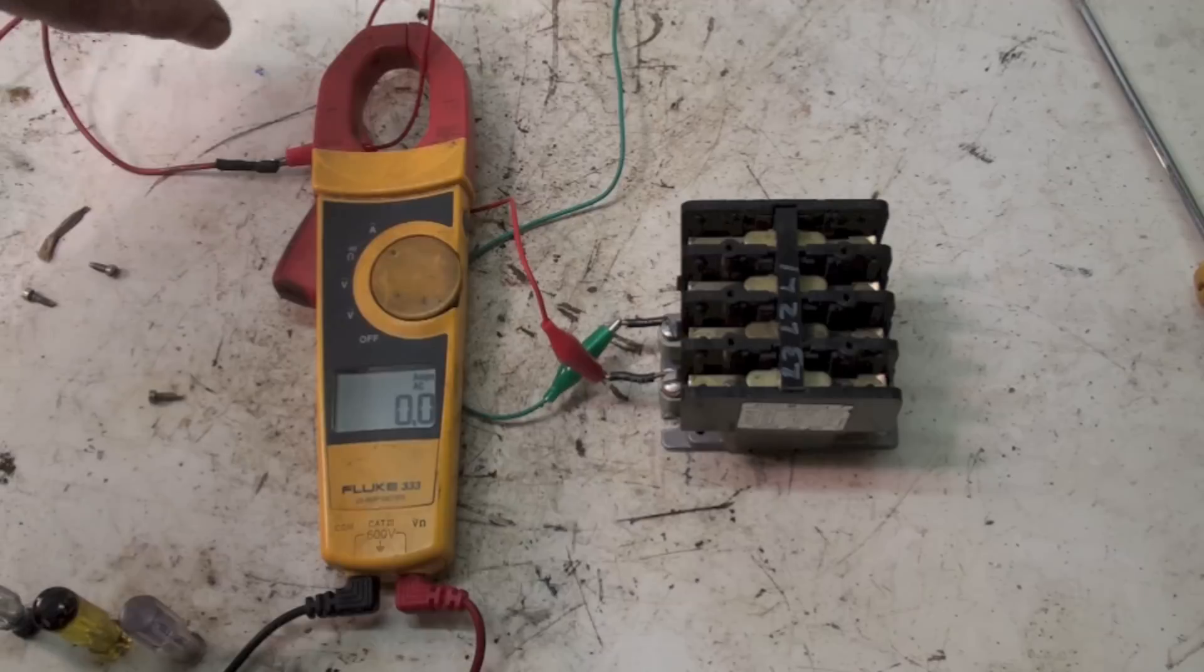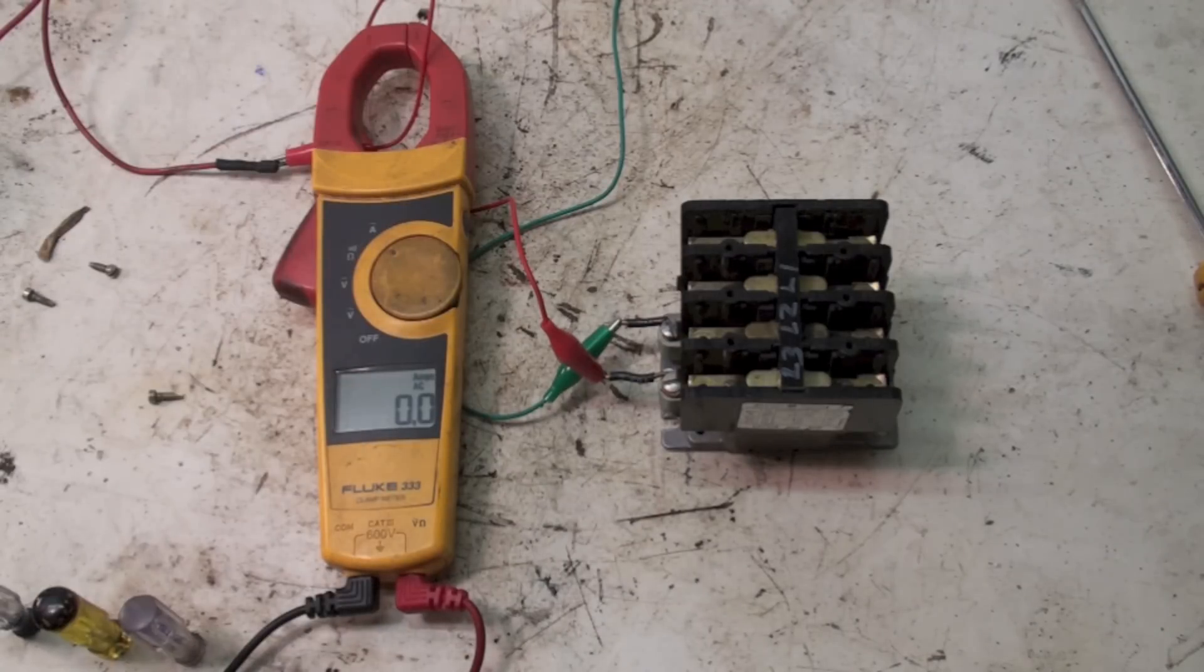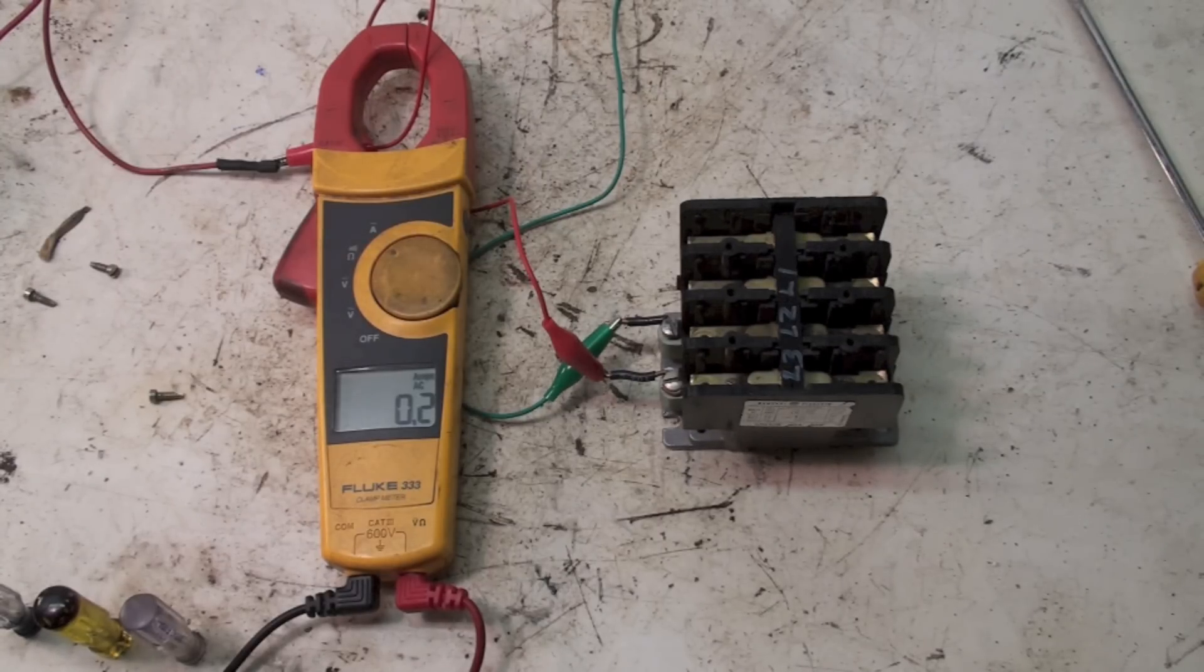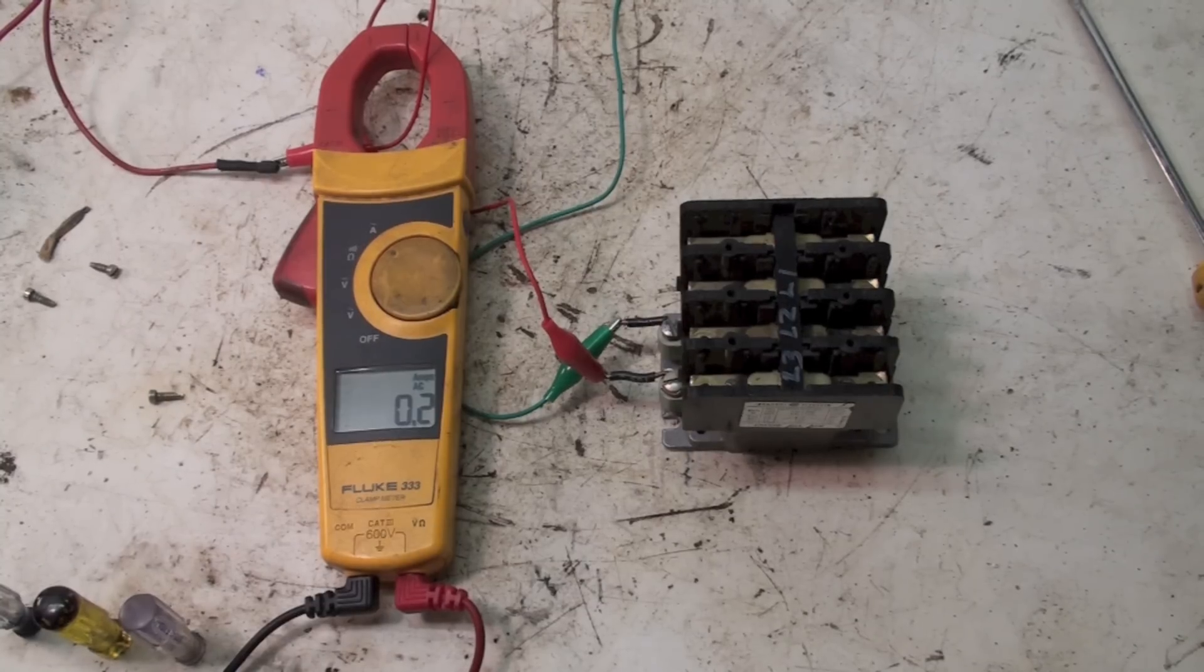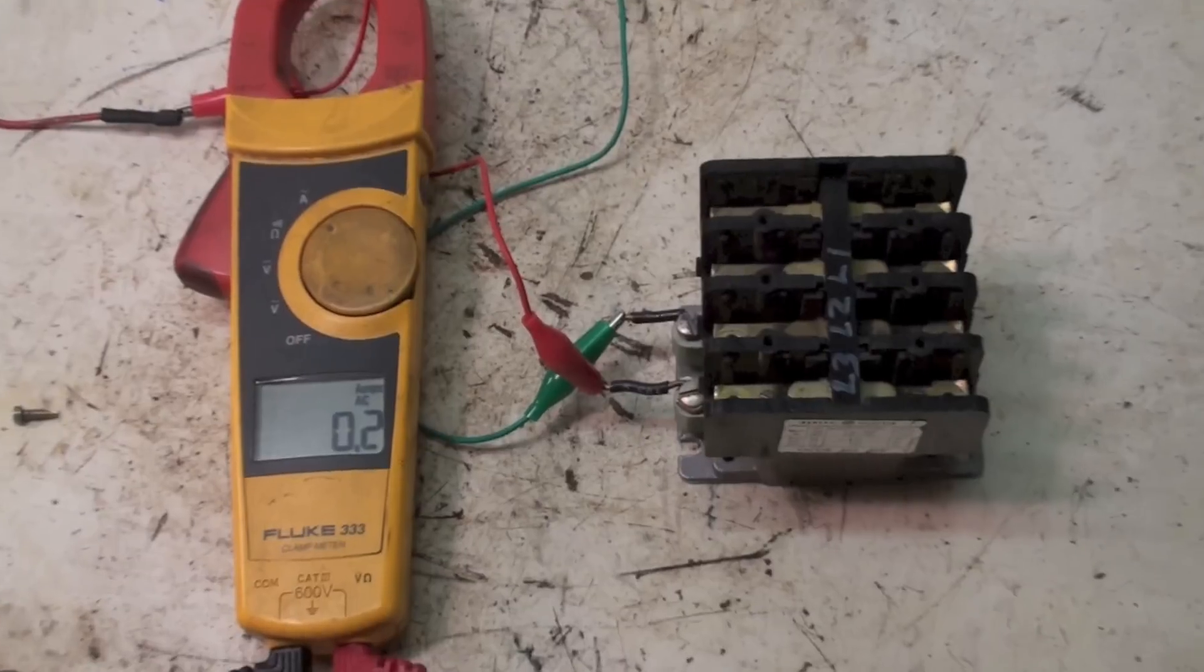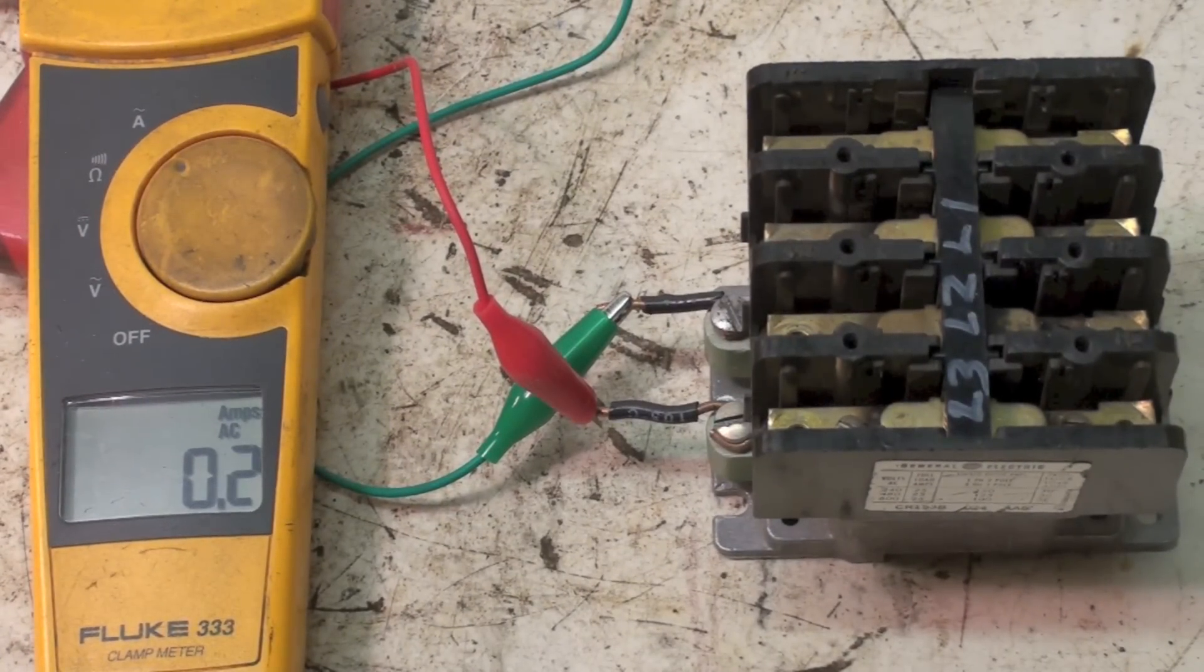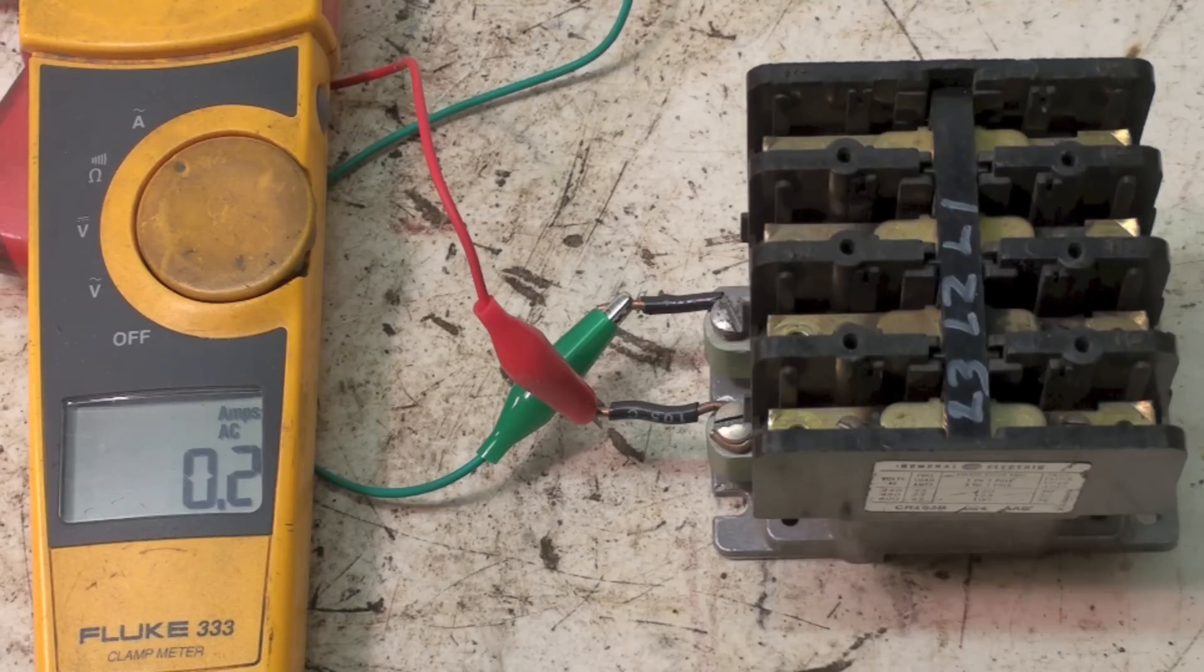What I want to demonstrate is what happens when different things happen to this coil. Right now it's normal, everything's fine. The contactor will pull in like it should. If you notice we've got about 0.2 amps and it pulled in normally, just like it should. Now let's go ahead and shut it off.